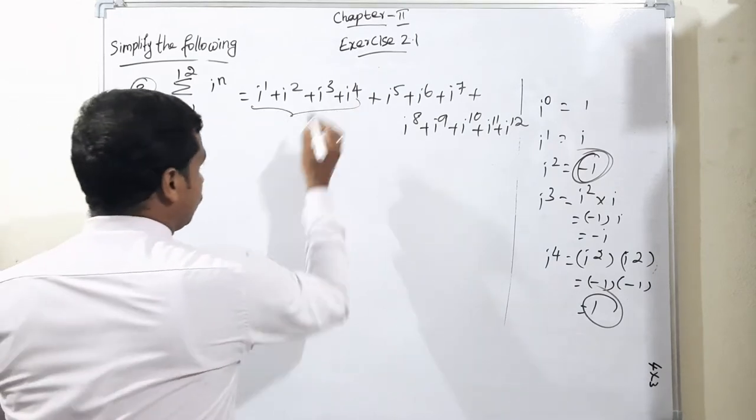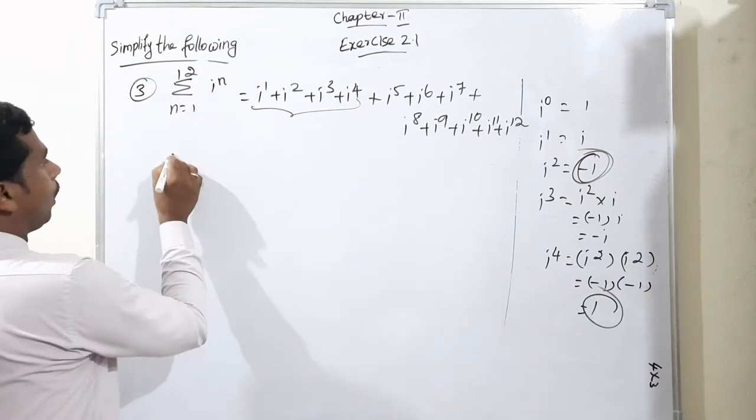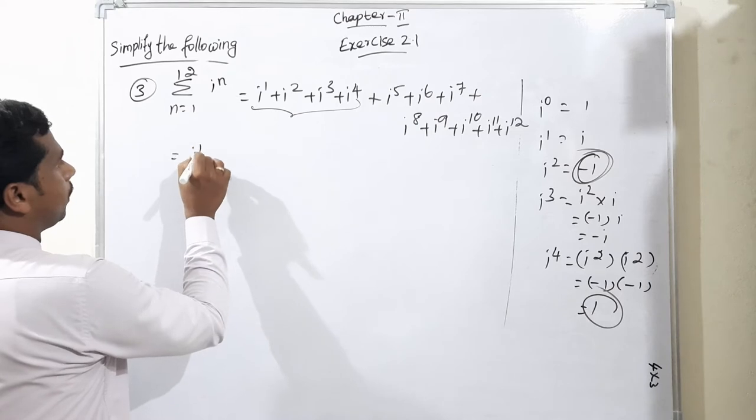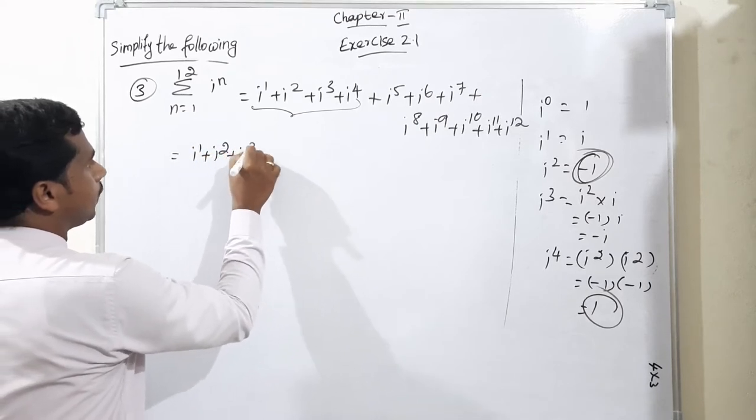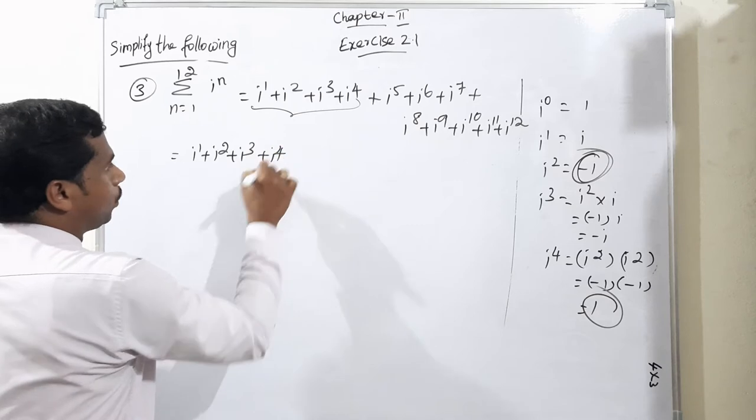So now we split this into groups of 4. First terms as it is: i to the power 1 plus i to the power 2 plus i to the power 3 plus i to the power 4.